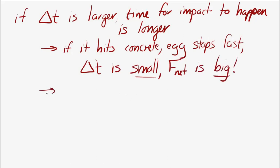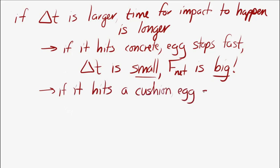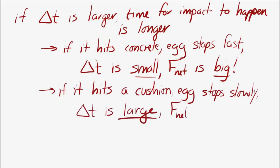We can make delta t larger if the egg hits some kind of cushion, like a pillow. If it hits a pillow, it comes to rest over a longer time. That means the net force applied to the egg is smaller — applied over a longer time — and the egg is more likely to survive.